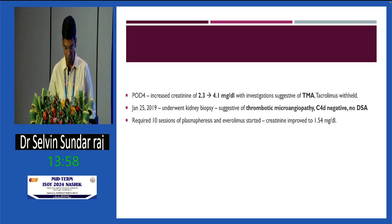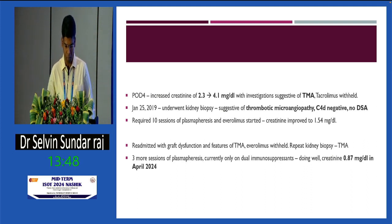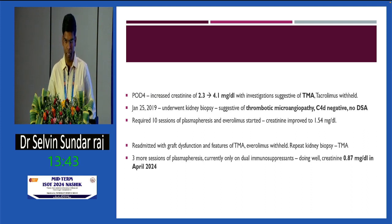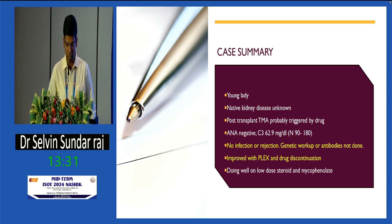Creatinine improved to 1.54. She was readmitted again with graft dysfunction and features of TMA. Biopsy was again suggestive of TMA with no evidence of rejection. Three more sessions of plasmapheresis were done. She was continued on dual immunosuppression and is currently doing well with creatinine of 0.87, having visited our hospital this month. This is a case summary of unknown native kidney disease, post-transplant TMA probably triggered by drug, with no evidence of infection or rejection. Genetic workup and antibodies were not done. She improved with plasmapheresis and drug discontinuation.